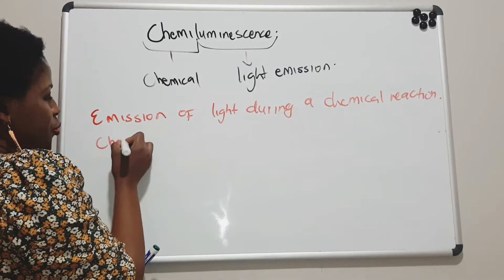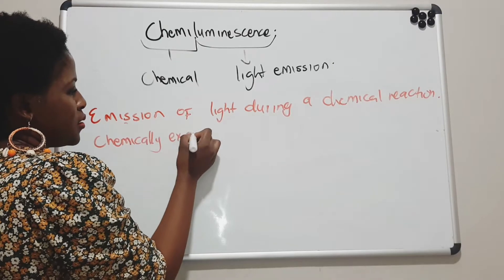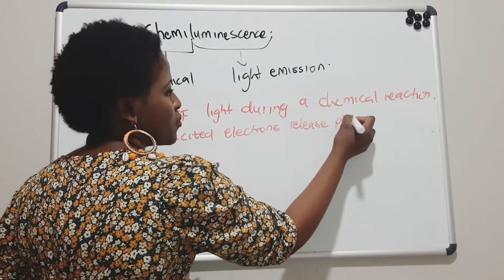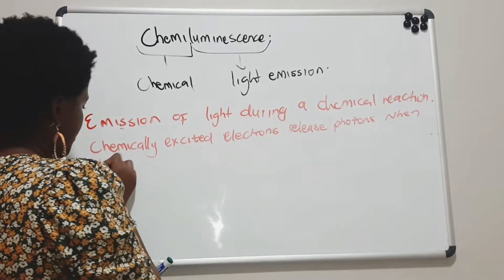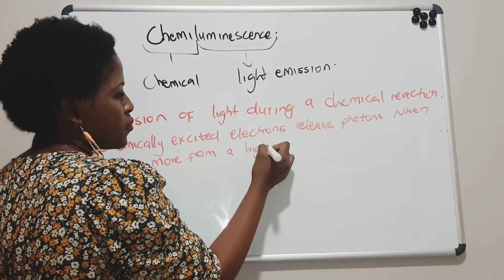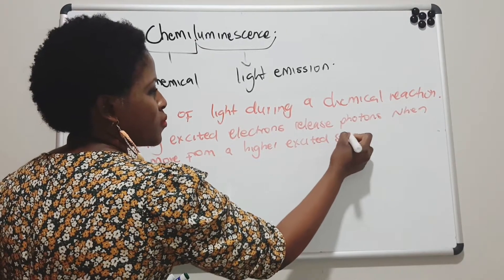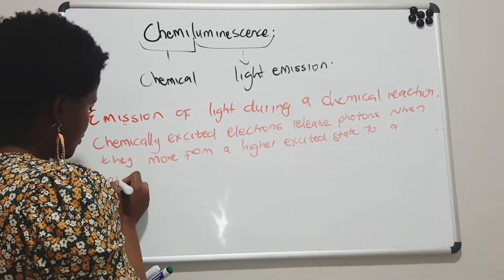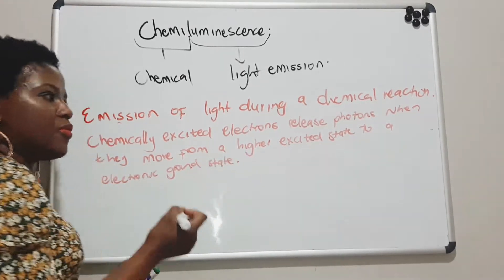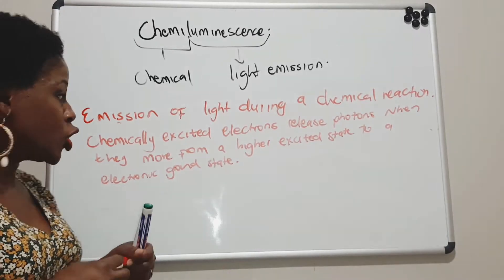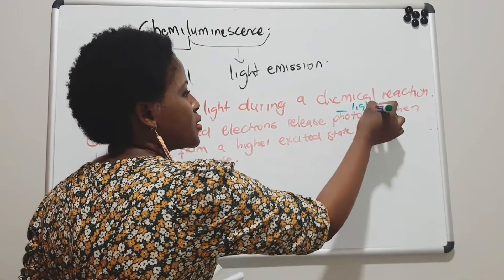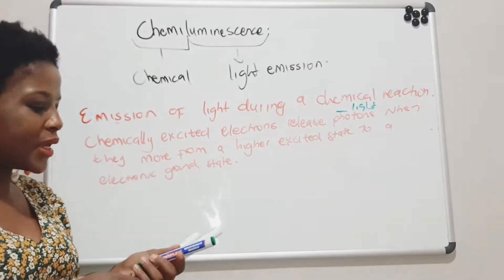So we have electrons that will be chemically excited. When they move from their higher excited state to an electronic ground state, that is when photons — which represent light — will be released.